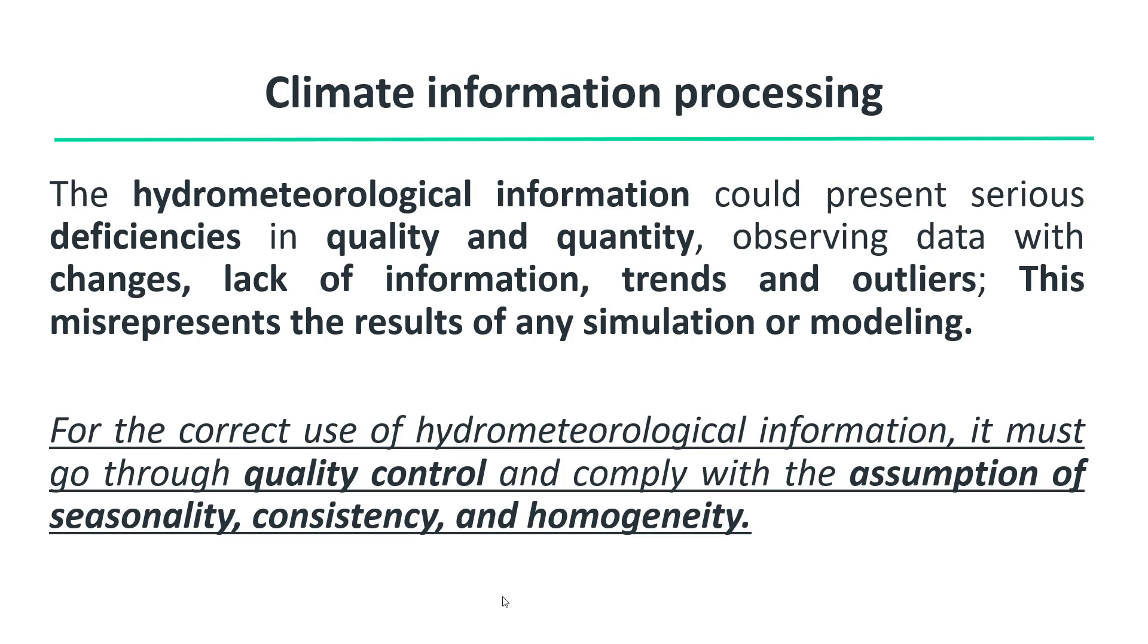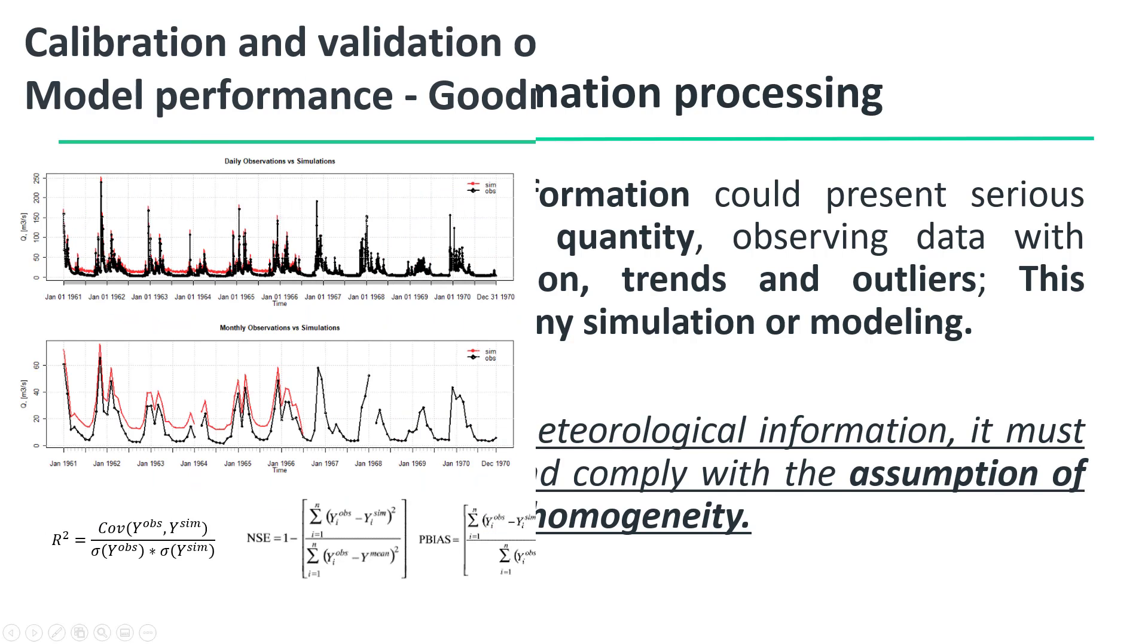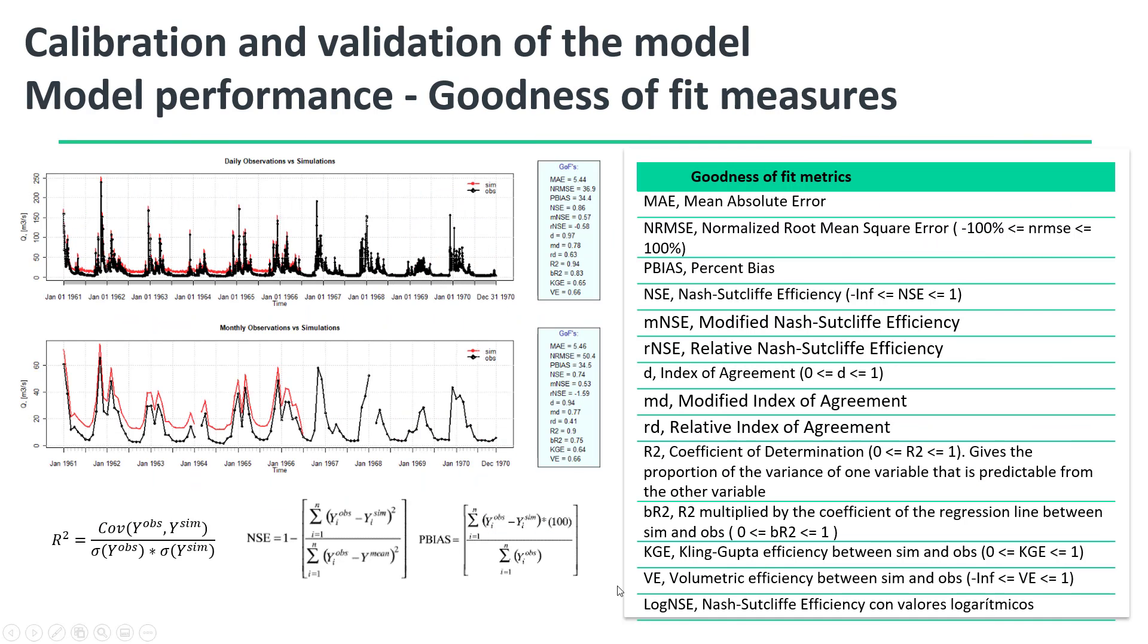You could estimate precipitation surfaces for each time step of the model by using interpolation methods. Then, the hydrological parameters must be assigned to each catchment. Once we configure the hydrological model in WEAP, the model must be calibrated and validated.